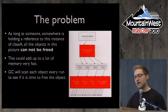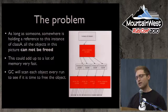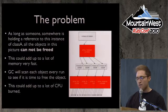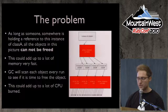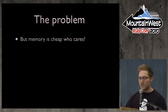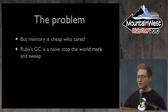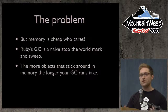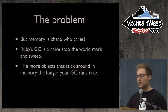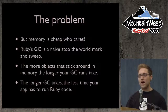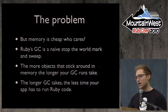Also important: every GC cycle, GC is going to scan this tree of objects and burn CPU cycles looking at it saying 'are these free yet? No.' Over and over again. You might say memory is cheap and CPUs are cheap, but Ruby's GC is a naive stop-the-world mark-sweep GC, which means the more objects that stick around in memory that you don't need, the longer your GC runs are going to take — and the less time your app has to run Ruby code. That's bad.